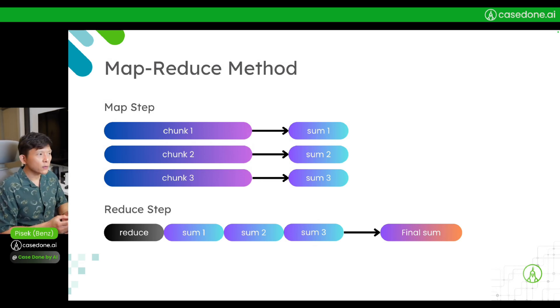The first one is what we call the map-reduce method. In the map-reduce method, we process all the chunks to get a summary for them respectively. First, chunk number one gets summarized to summary one, chunk number two to summary two, and so on. And then in the next phase...